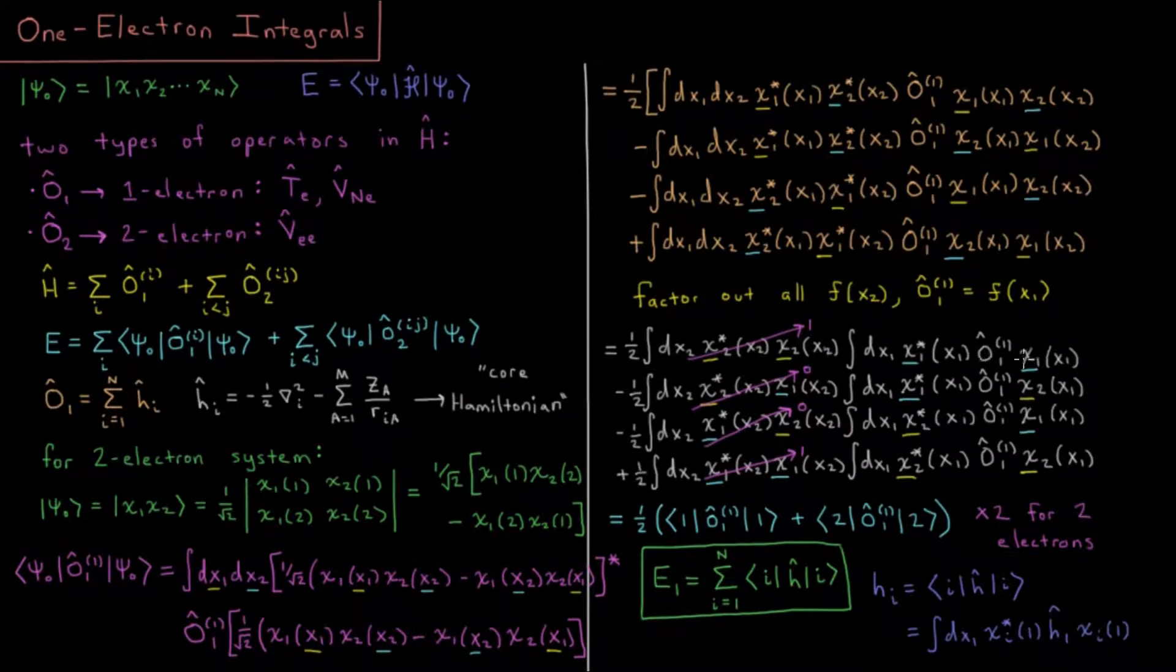So these central two terms drop out, and what's going to be left is just the term χ₁* O₁ χ₁ and χ₂* O₁ χ₂. Note that it's x₁ in all of these terms inside of here.